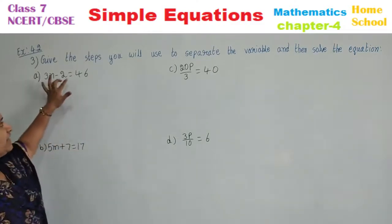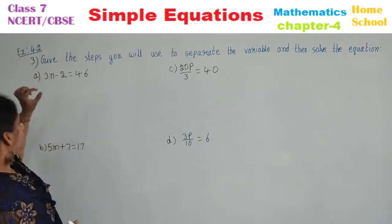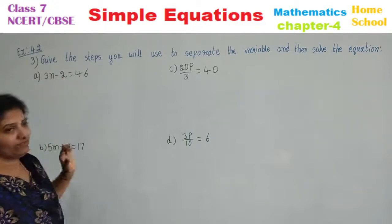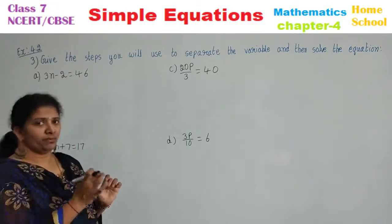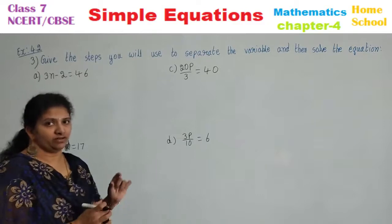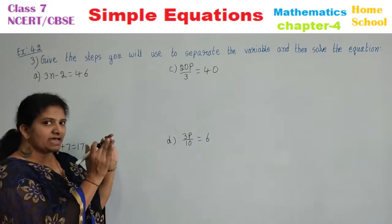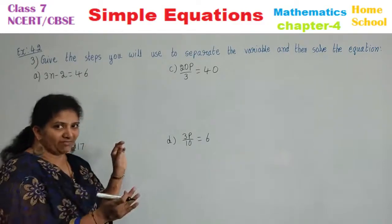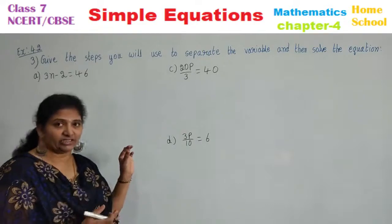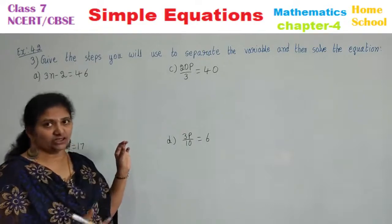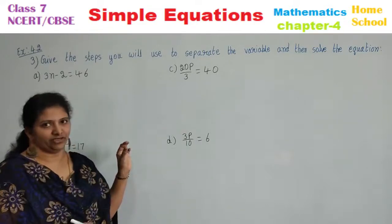A: 3N minus 2 equals 46. First, what we need to observe. In the previous mains we have done, seeing the variable and beside it what number you have — addition, subtraction, multiplication, division — and then its reverse we have done.